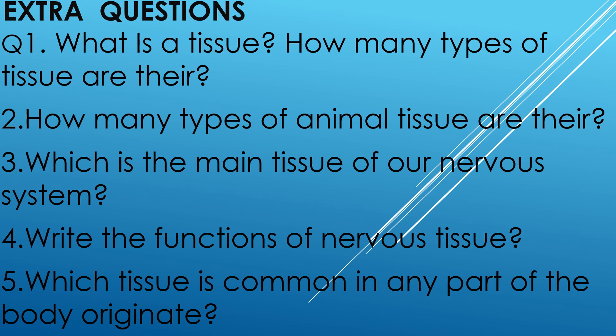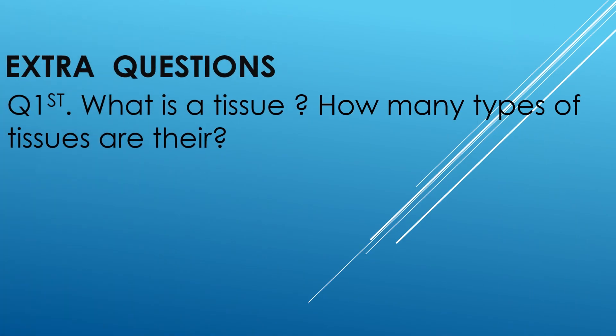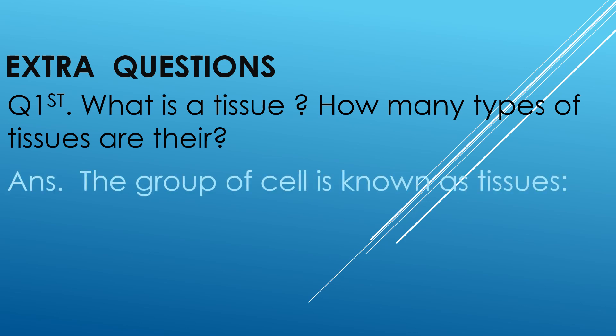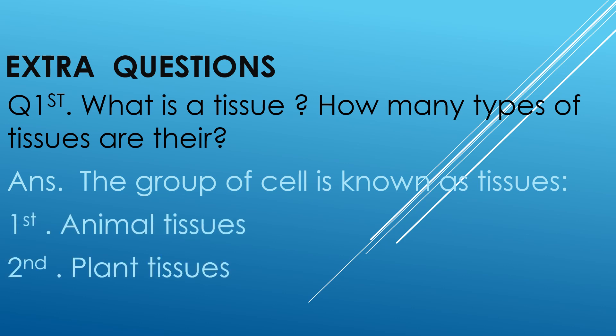Let's discuss question first. What is a tissue? How many types of tissue are there? The group of cells is known as tissue. There are two types of tissues: first, animal tissue; second, plant tissue. These two parts are animal tissue and plant tissue.